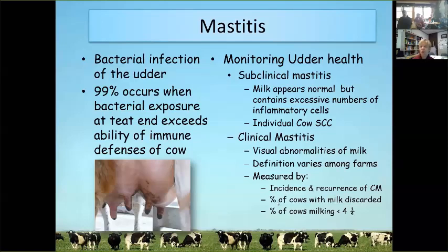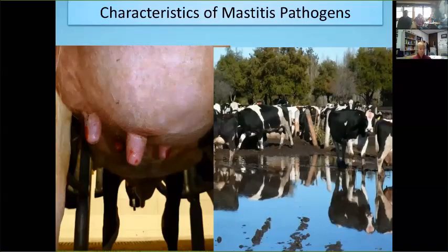A couple of other monitors of mastitis worth tracking: the percent of cows with milk discarded, which measures current economic milk loss; and the percent of cows milking with less than four quarters, which measures chronicity. Clinical mastitis is not well recorded on at least 50% of dairies we visit today, regardless of herd size. So if we're looking at controlling environmental mastitis, the first step is: are we measuring and defining it properly?